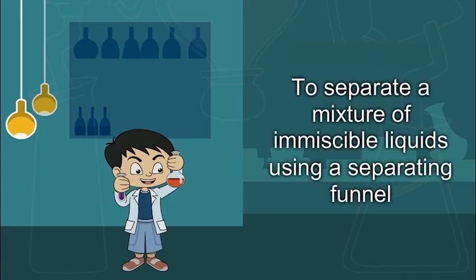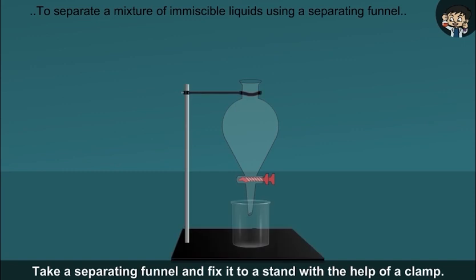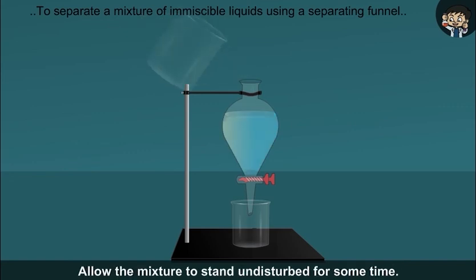To separate a mixture of immiscible liquids using a separating funnel. Take a separating funnel and fix it to a stand with the help of a clamp. Then pour a liquid mixture of water and kerosene into it. Allow the mixture to stand undisturbed for some time.